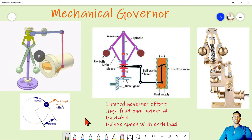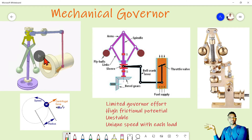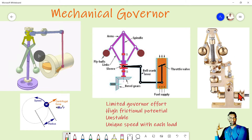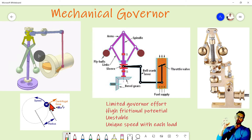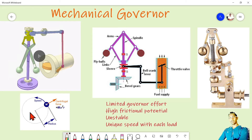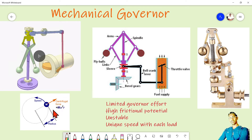Now we move to mechanical governance. There are four diagrams here: an animation of mechanical governance, a diagram illustrating its arrangement, the actual view of mechanical governance components, and a small diagram showing the theory of centrifugal force. For better understanding it is important to have good knowledge about centrifugal force. Suppose there is a mass moving in a circle around a center axis with radius r.